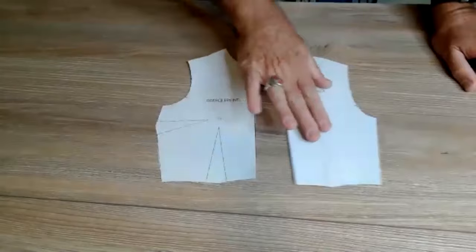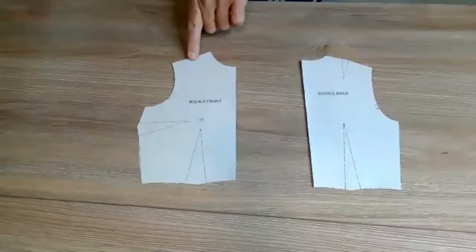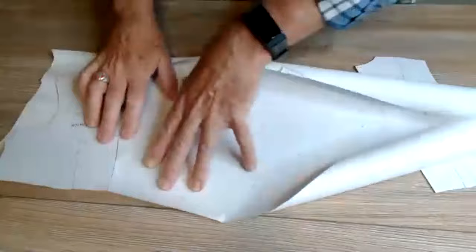On this pattern, this looks like our regular back bodice. This one looks a little different than our other front bodice and that's because it has a side dart rather than a shoulder dart and that side dart has been moved.